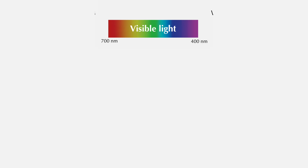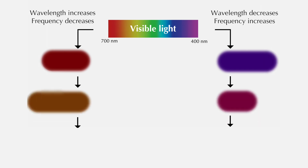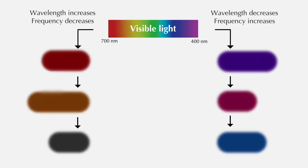Using that equation, we can vary frequency and wavelength to reach the invisible parts of the electromagnetic spectrum. There are other types of radiation on both sides of the visible light spectrum.